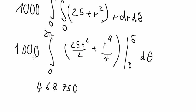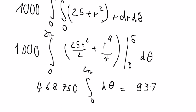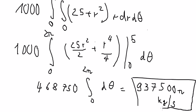After evaluating, we get 468,750 times 1000, then multiplied by 2π, giving a final answer of approximately 93,937,500π kilograms per second. And that is the full final answer.